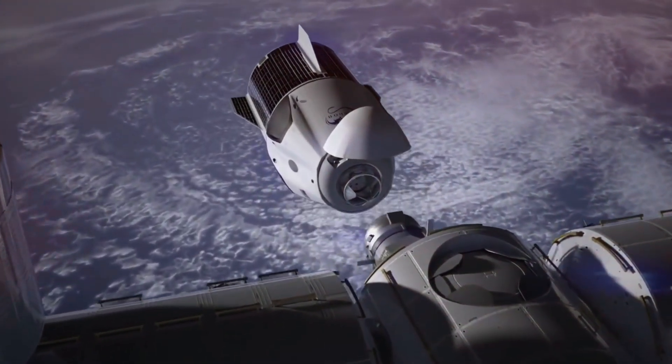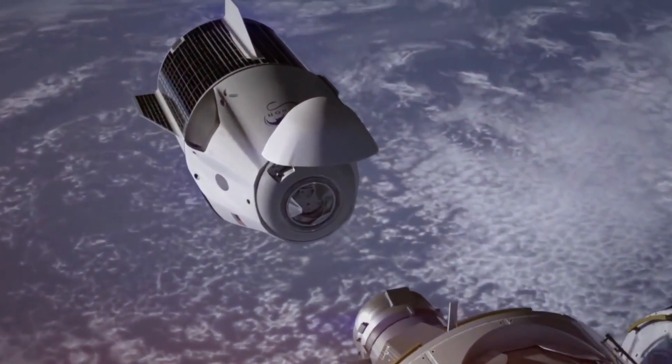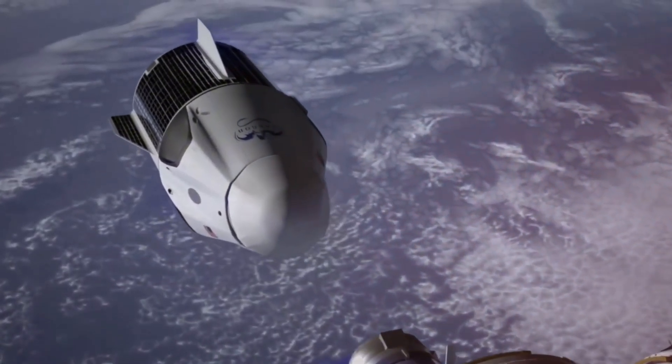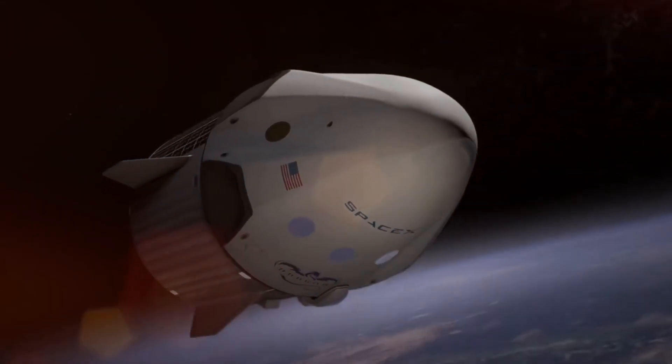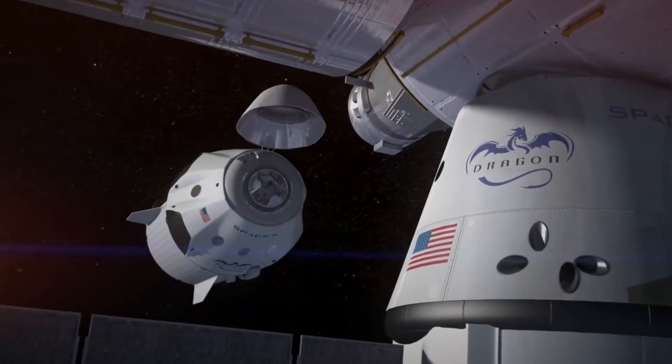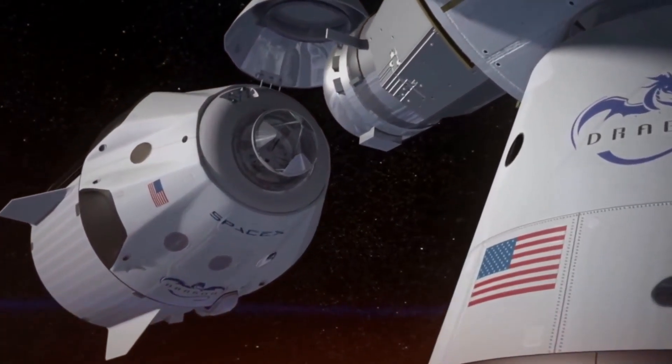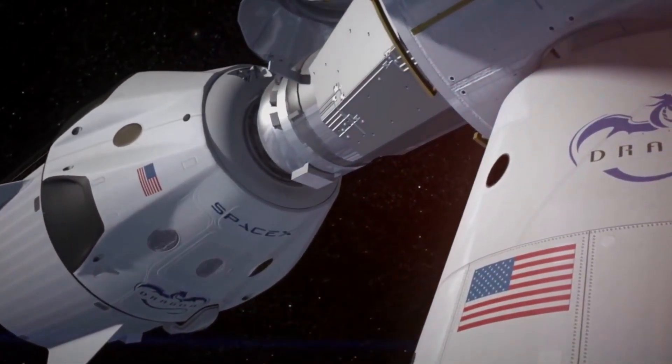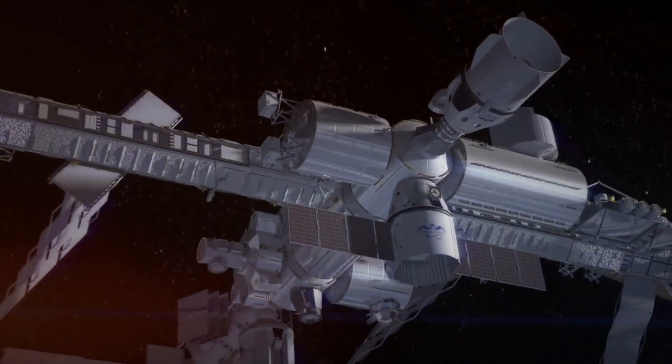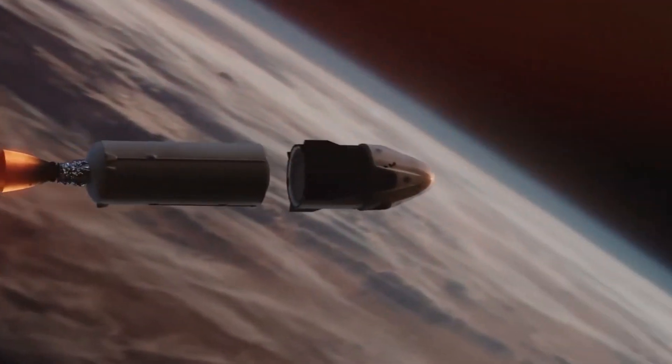Think about this for a moment. SpaceX has been building and testing C213 as their newest and last Dragon spacecraft. This vehicle was supposed to make its debut with the Crew 10 mission, carrying four fresh astronauts to relieve Butch and Sonny's crew. But in December, something changed.